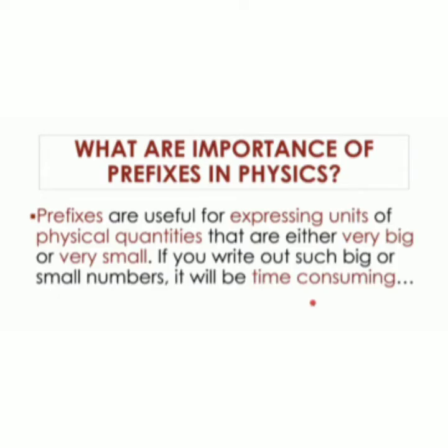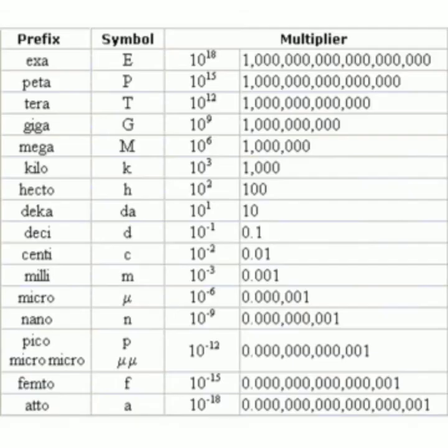Why do we use prefixes? Prefixes are used to express very large or very small quantities. For example, if I have a very large quantity, instead of writing all the zeros or digits, I can write it in prefix form. This saves time and reduces mistakes. We use prefixes to make it simpler.